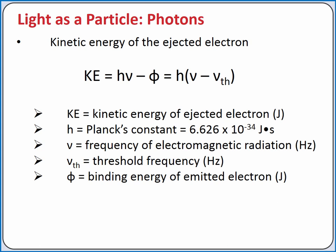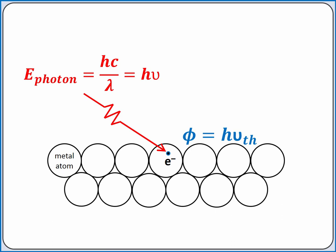According to the law of conservation of energy, we cannot create or destroy energy. If the energy of the photon is greater than the binding energy, the excess energy absorbed by the electron is converted into kinetic energy. The kinetic energy of the electron equals Planck's constant times the frequency of our photon subtract the binding energy of the electron. The electron has absorbed a photon with an energy greater than the binding energy, and the extra energy is converted into kinetic energy for the electron.